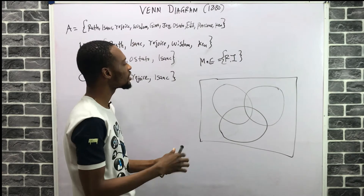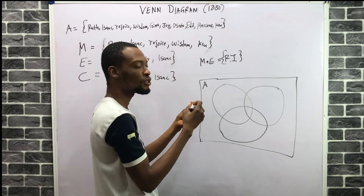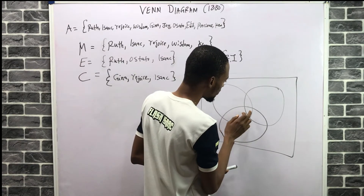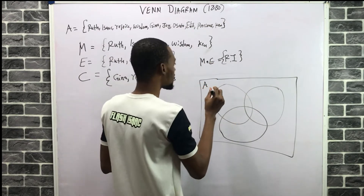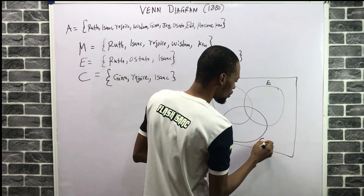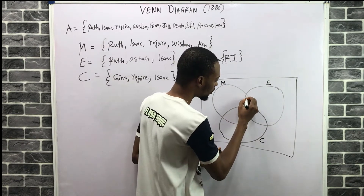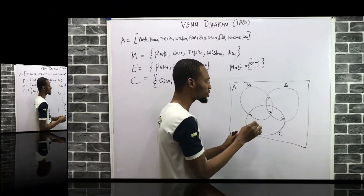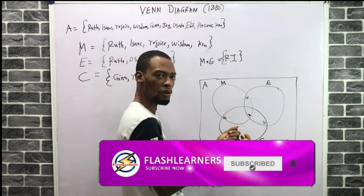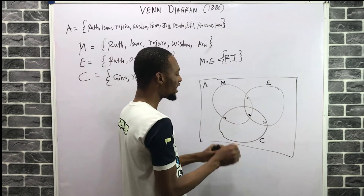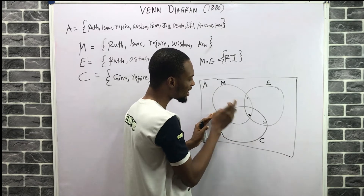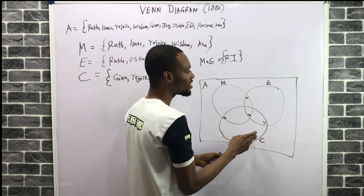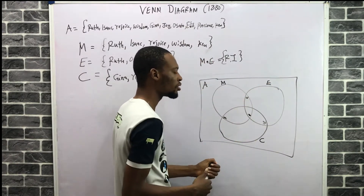For a three-set Venn diagram, the first thing to do is identify the universal set A, which contains everything in all other sets. Now we have three sets: M for maths, E for English, and C for computer. The centre Z represents what all three sets have in common. The region S represents what M and C have in common. Y is for what E and C have in common, and W is for what M and E have in common.